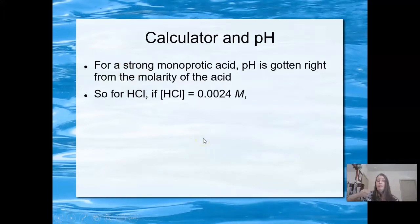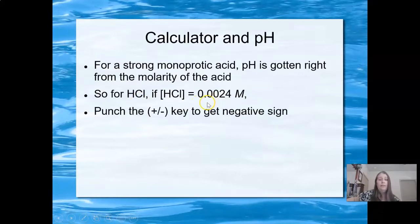So for an example here, if we use HCl, but I could use any of the monoprotic strong acids. I could use HBr, HI, nitric, perchloric. We have the strong monoprotic acids. I would know immediately that if I know the molarity of the acid, I know the molarity of the H+. So this is just a matter of type in the negative, punch the log, type in 0.0024.